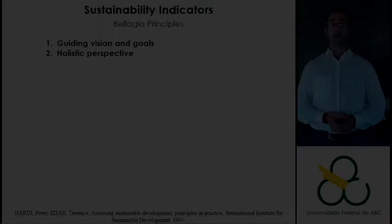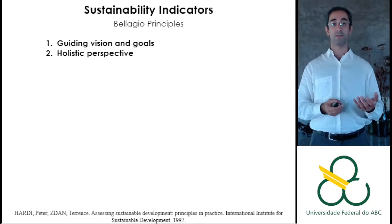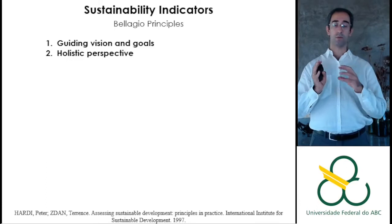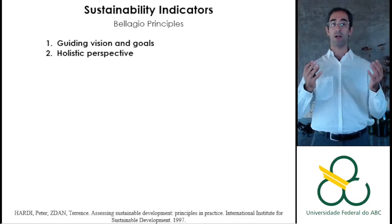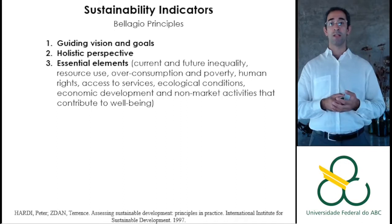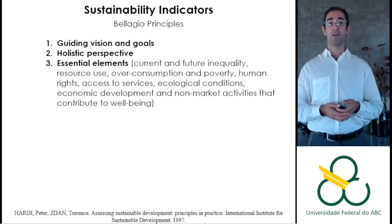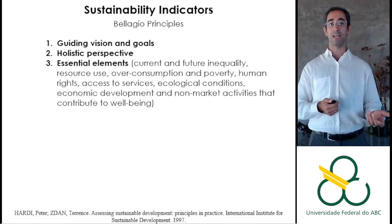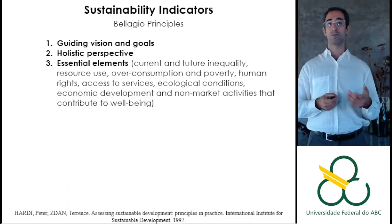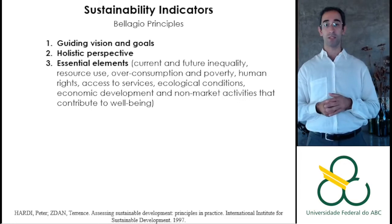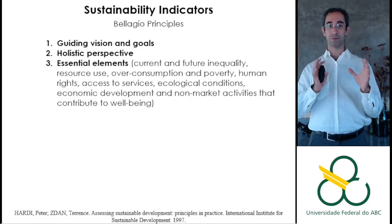Sustainability indicators should provide a holistic perspective — not separate indicators processed individually, but a framework showing how each relates to the others, giving a broader view of the aspects you want to achieve. They need to be important, covering essential elements like current and future inequality, resource use, overconsumption, poverty, human rights, access to services, ecological conditions, economic development, and non-market activities not incorporated in national accounts like GDP but that contribute to well-being. It is difficult to select just one indicator that provides all this information important for sustainable development.